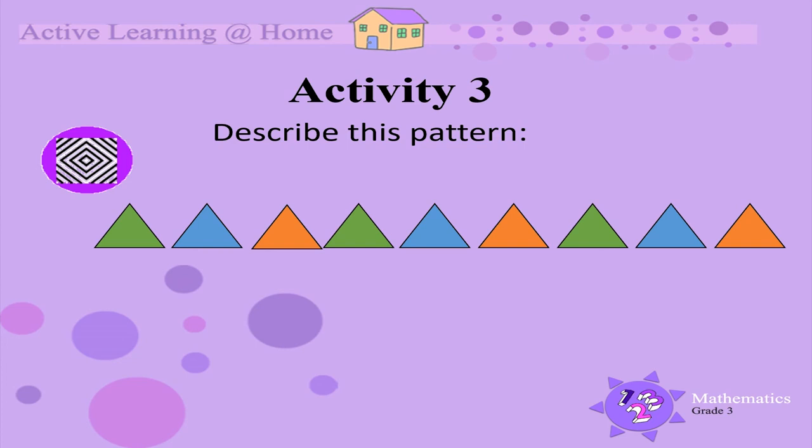You could describe it as green triangle, blue triangle, orange triangle. And then it repeats: green triangle, blue triangle, orange triangle, and so on.